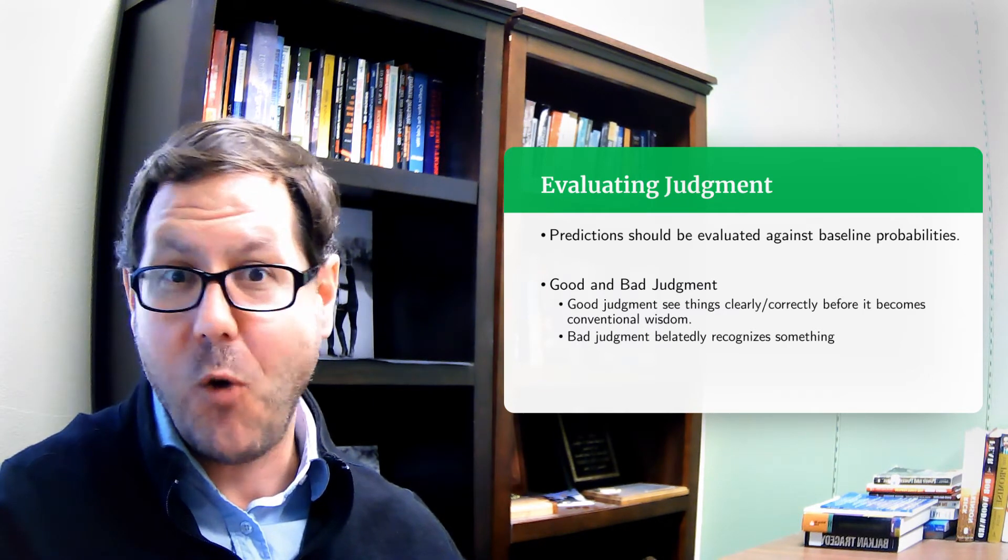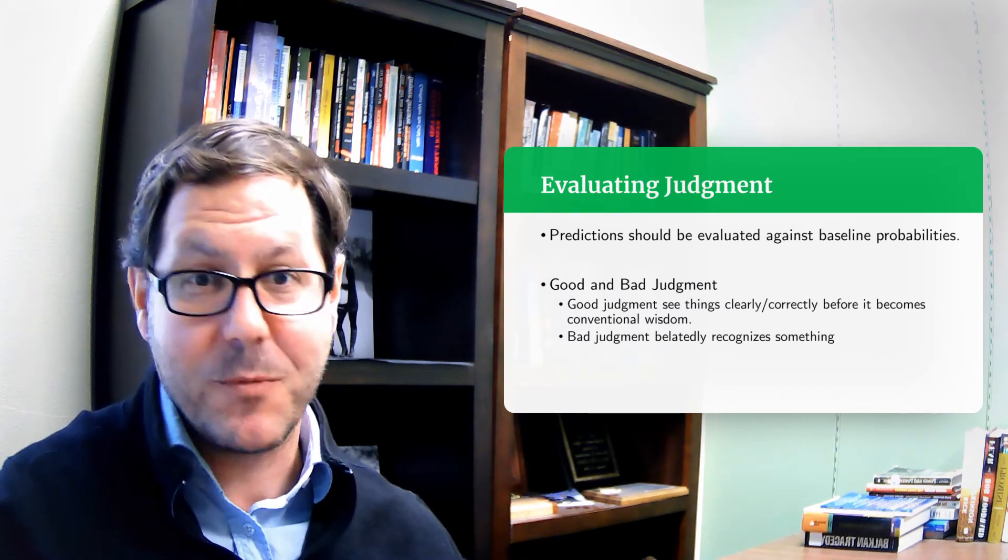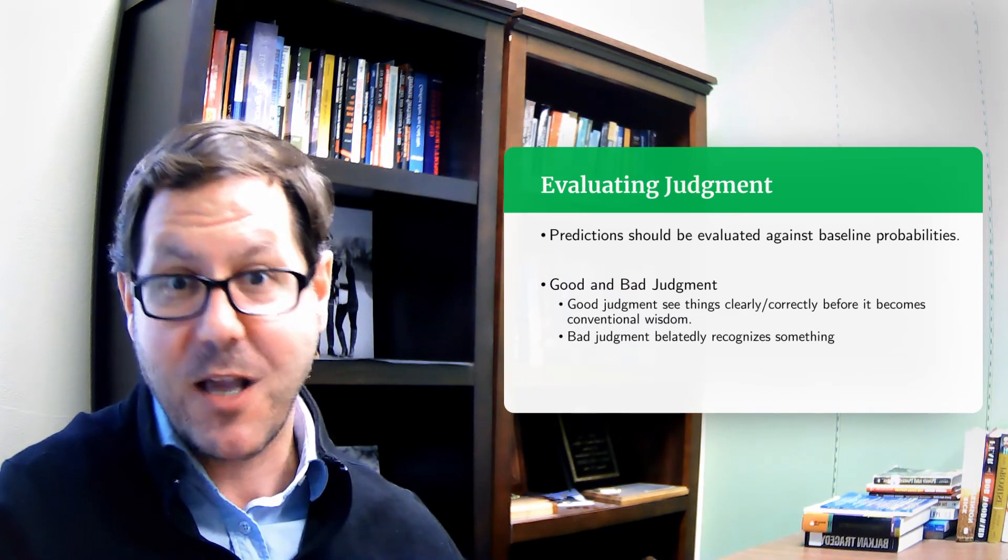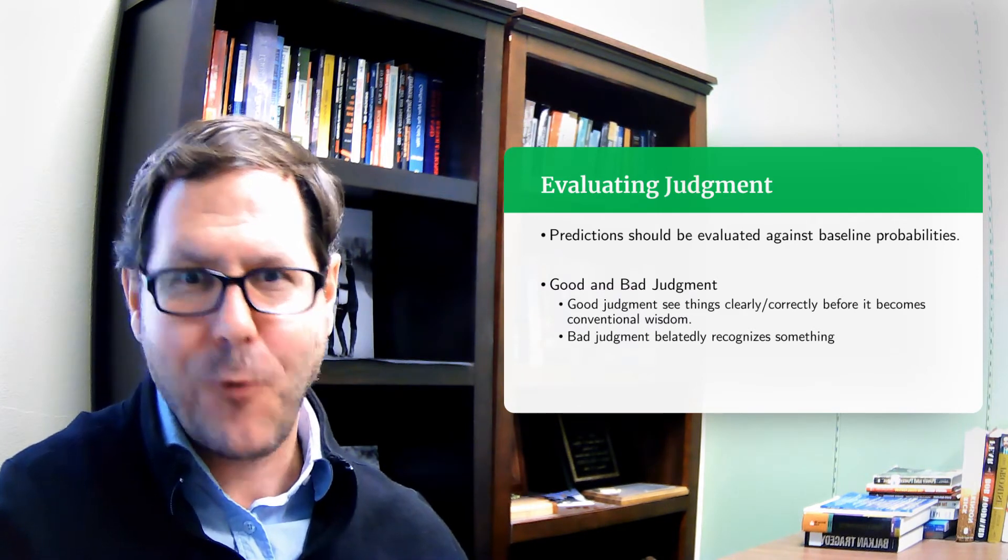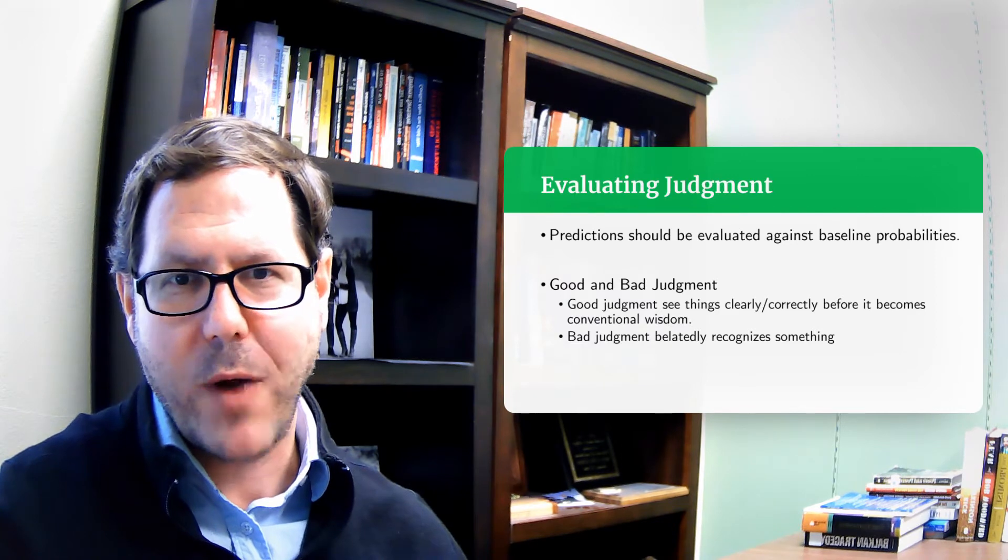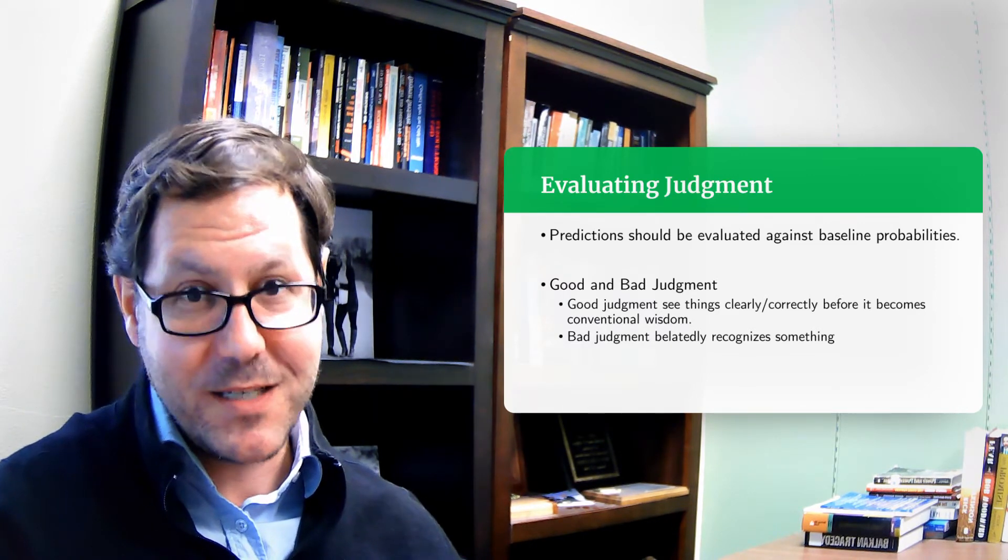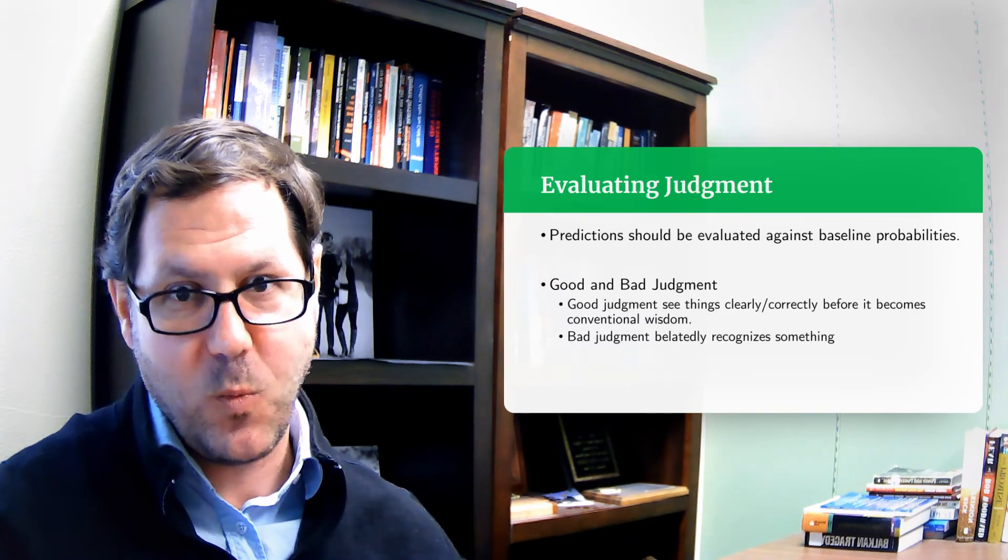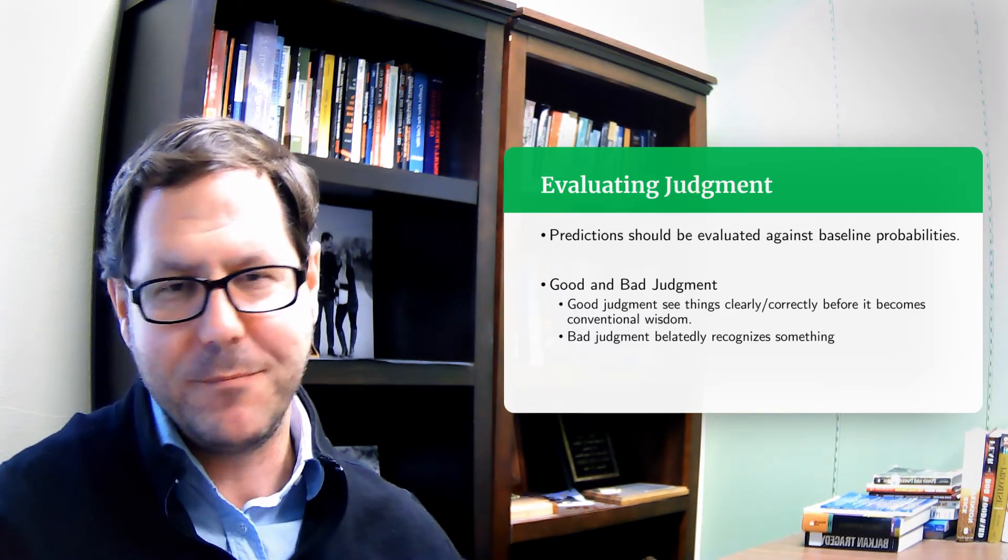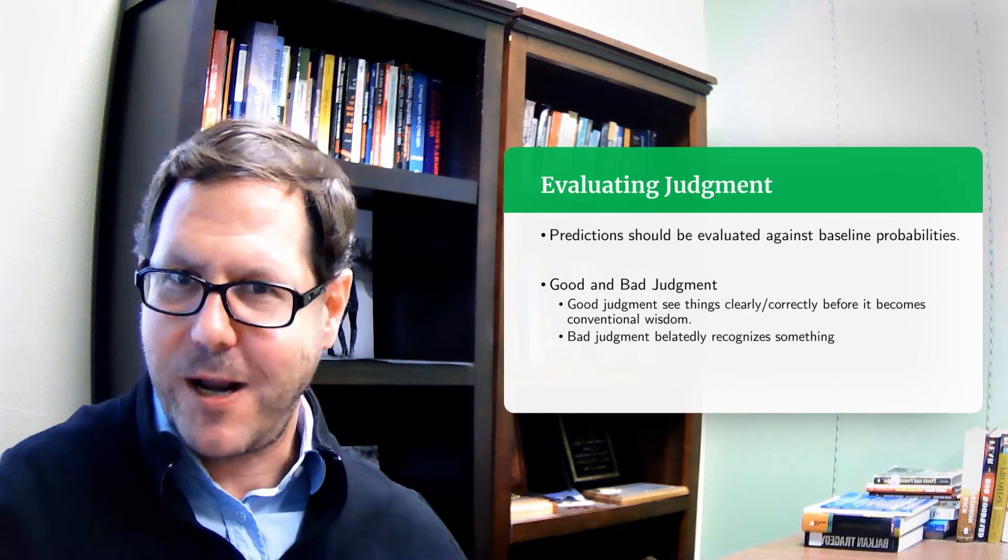If something is almost certain to happen in terms of baseline probabilities like the sun rises in the east. If I forecast for you tomorrow the sun will rise in the east. That's not a particularly impressive forecast because the baseline probability is one it will happen, barring the end of our solar system.